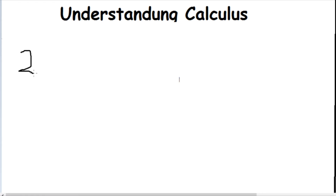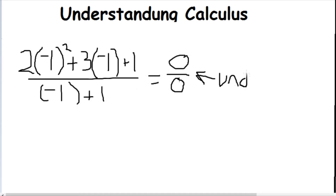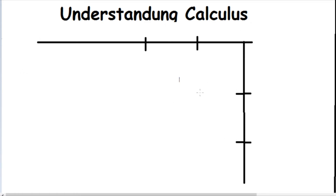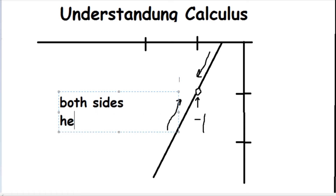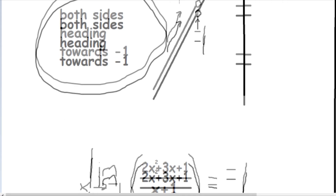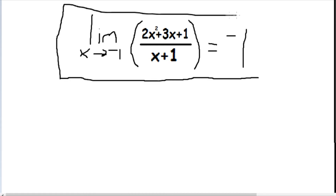If you plug in negative one, you get zero over zero. That's a special kind of division by zero — if it's zero over zero, you can do something else to the function. But both sides of the function are still heading towards negative one even though it's not there, kind of like the kids heading toward McDonald's. So the limit as x approaches negative one of that function equals negative one.